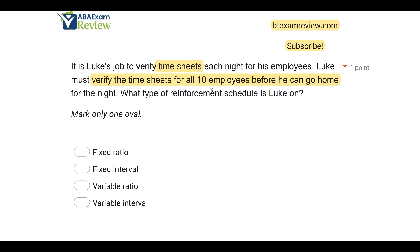Now, is it fixed or is it variable? Fixed implies it's always going to be the same amount. Variable would be on an average, where the amount required could differ. Luke must verify 10 employees every night — that doesn't change. Therefore, Luke's schedule is fixed. So what type of schedule is Luke on? He's going to be on a fixed ratio schedule. It's not a fixed interval schedule because it's not based on time, it's based on responses. And it's not variable ratio or variable interval because the amount of responses required aren't changing. The type of reinforcement schedule that Luke is on is A, a fixed ratio.